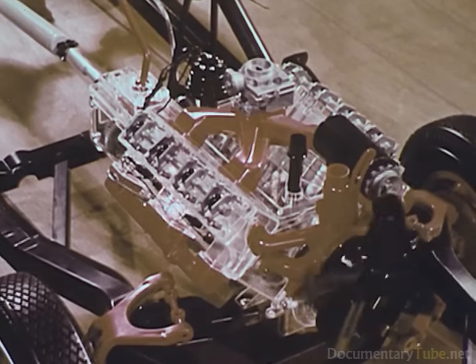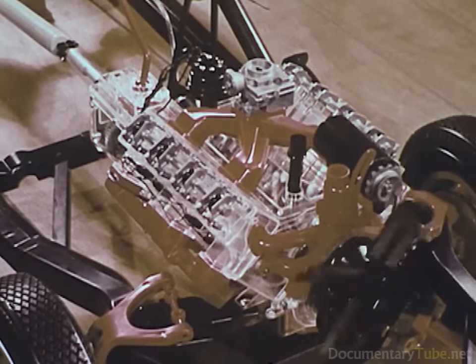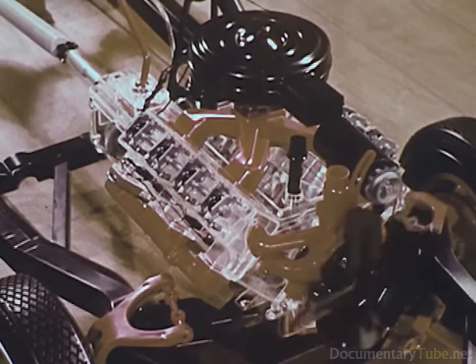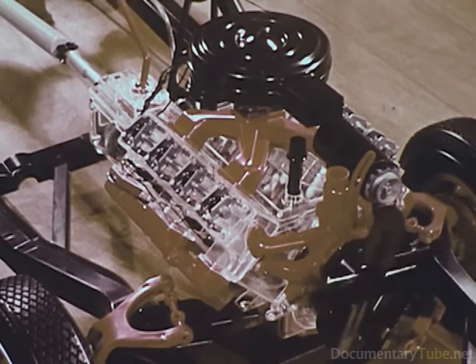Continuing the buildup, here are the carburetor and the manifold. And finally, the air cleaner atop the carburetor.